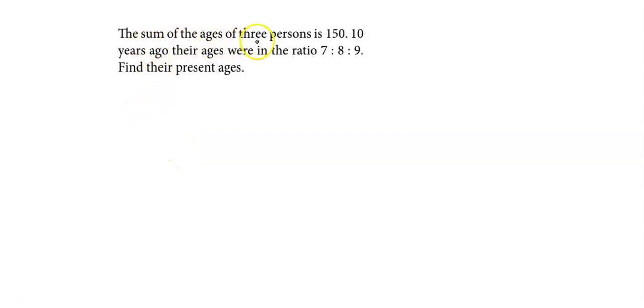The sum of ages of 3 persons is 150. 10 years ago, their ages were in the ratio 7 is to 8 is to 9. Find their present ages.